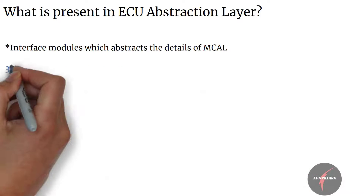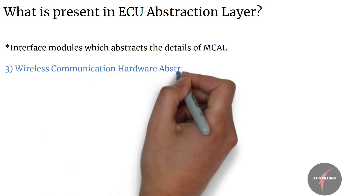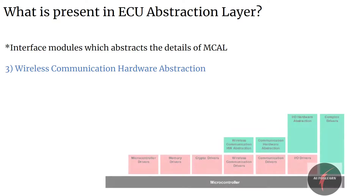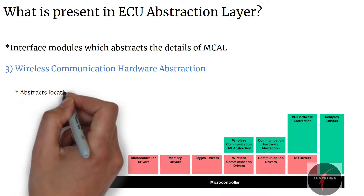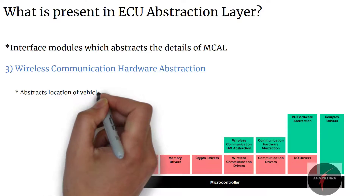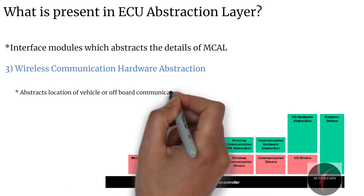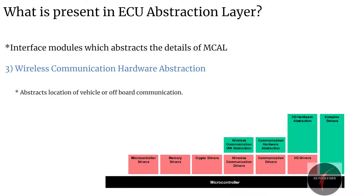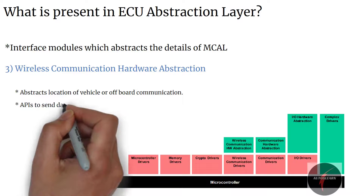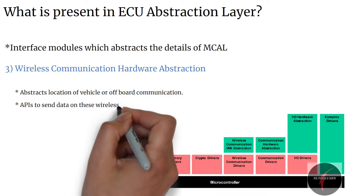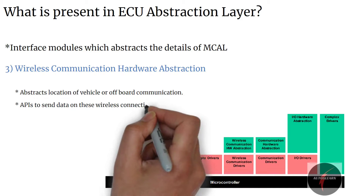Next, we have wireless communication hardware abstraction. The wireless communication hardware abstraction is a group of modules which abstracts the upper layer from the location of vehicle on-board or off-board communication, such as wireless Ethernet connections. The abstraction layer provides an API similar to communication hardware abstraction.